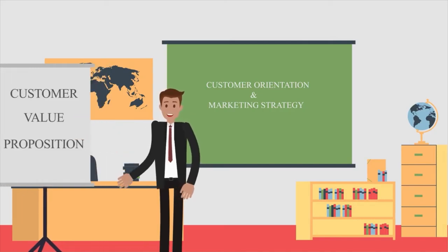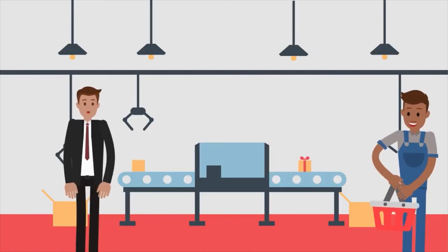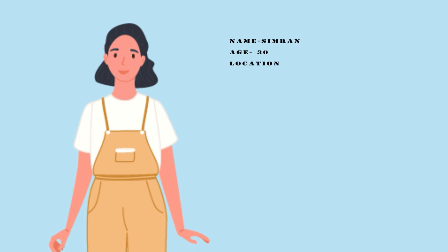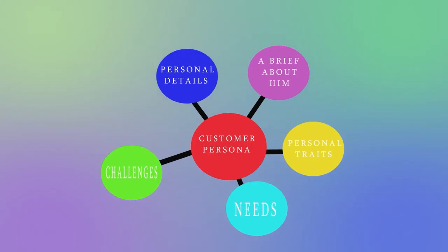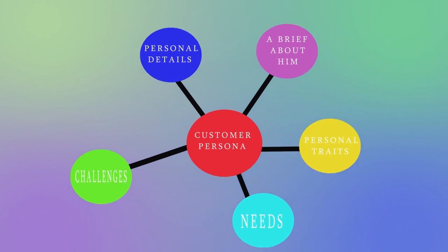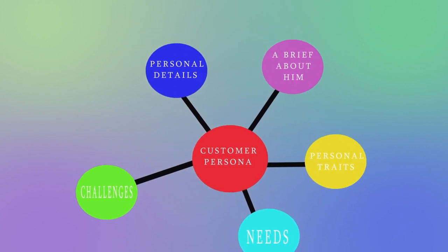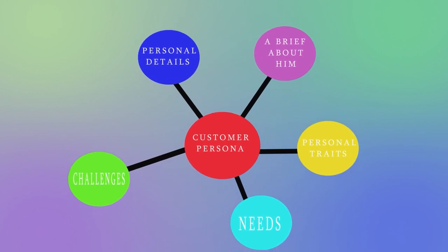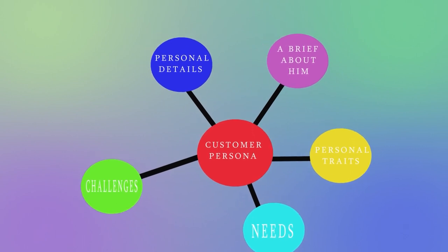To create value for your product, you need to understand the customer first. Let's understand customers by making a customer persona — an imaginary customer who will buy your product. Act like that customer and write down personal details: a brief about them, personality traits, needs, challenges, and preferred brands. Now we are ready with a customer persona for a business of organic fruits and vegetables.